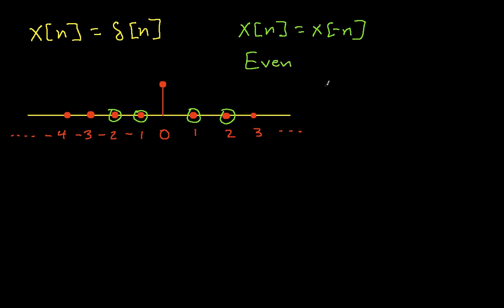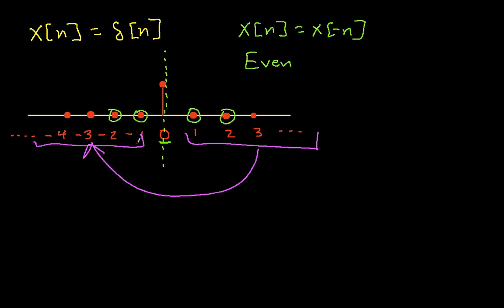I can also look at a graph of a function and determine quite easily whether it's even or odd. An even function is symmetric about the 0th sample. Looking at the graph, it's 1 when n equals 0 and 0 everywhere else. Symmetry means I could flip this about the point n equals 0 and it would look the same — everything on the right flipped left and vice versa gives the same signal. So the delta function is even.